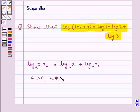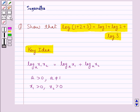a is not equal to 1, x1 is positive, and x2 is also positive. This is the key idea that we use for this question.